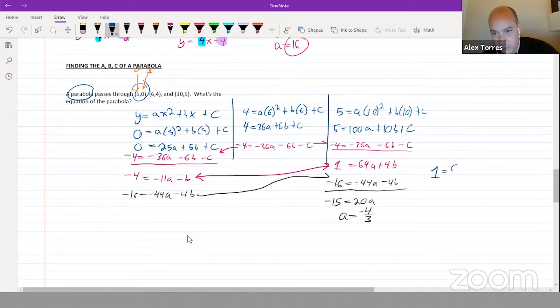We've got one equals 64 times negative four thirds—which is the value of a—plus 4b. And we can go ahead and solve that out. 64 times negative four over three is negative 85.3. One equals negative 85 and a third plus 4b. So adding that to both sides, you'll have 86 and a third equals 4b.